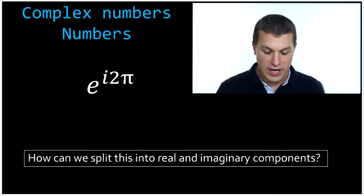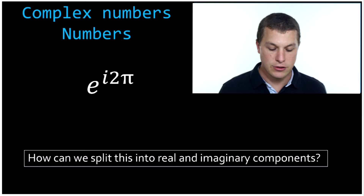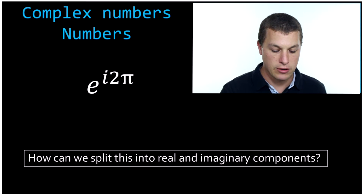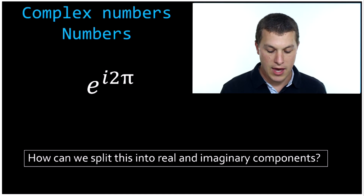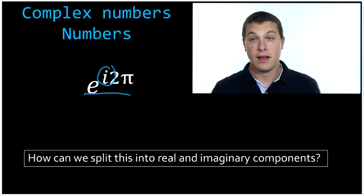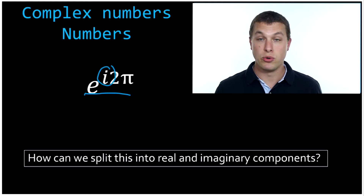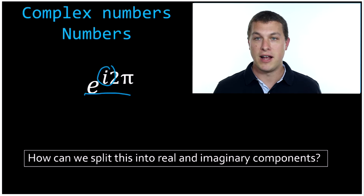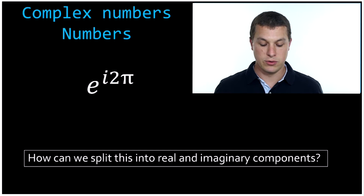So the whole idea is we have e to the i two pi — an example of something that looks like a complex number. It has this i in there, which means it has the square root of negative one in it. And we want to split it up into a real part and an imaginary part. To do that, we use something called Euler's relation.